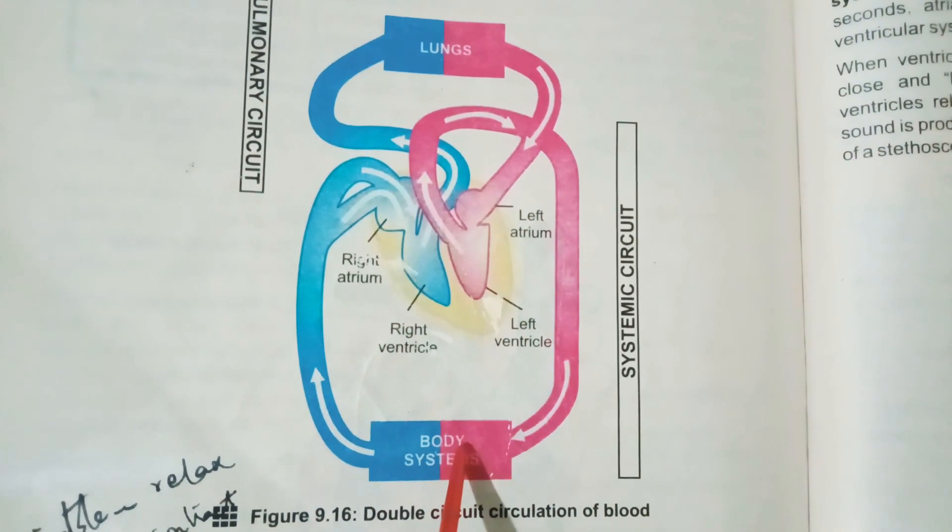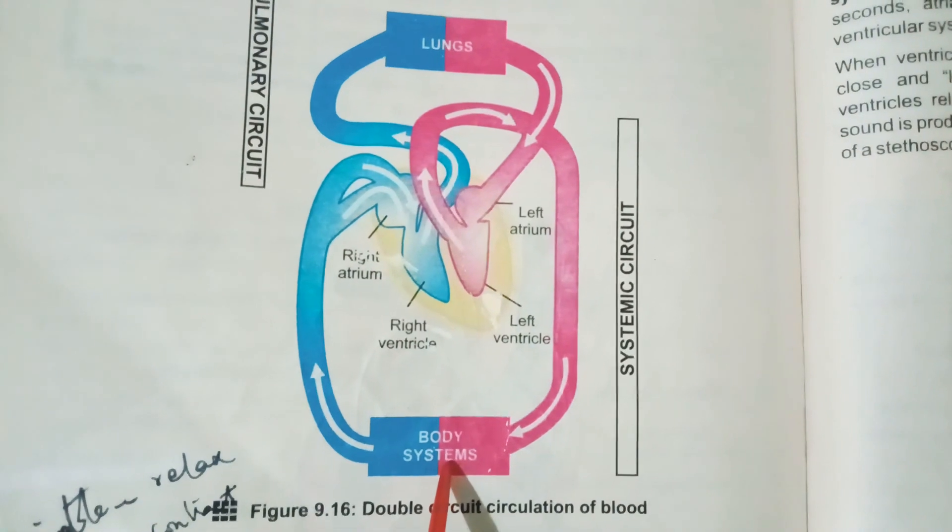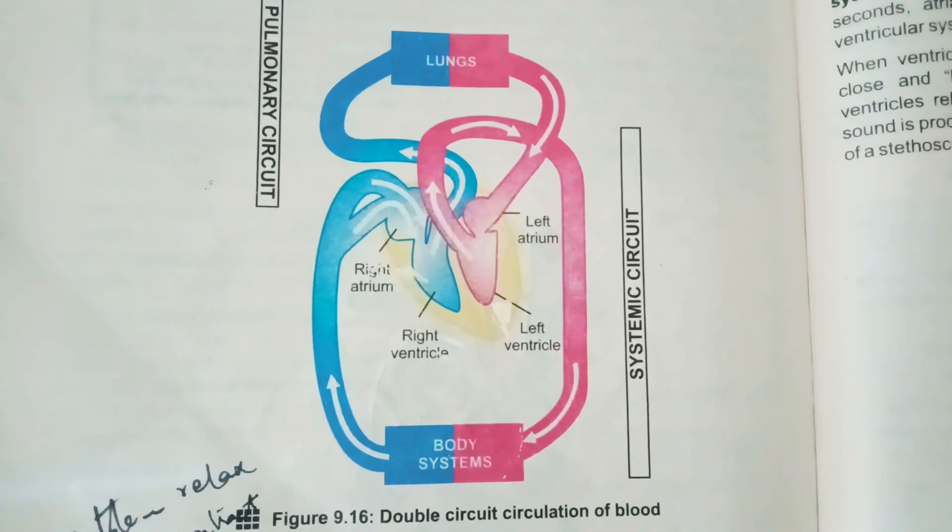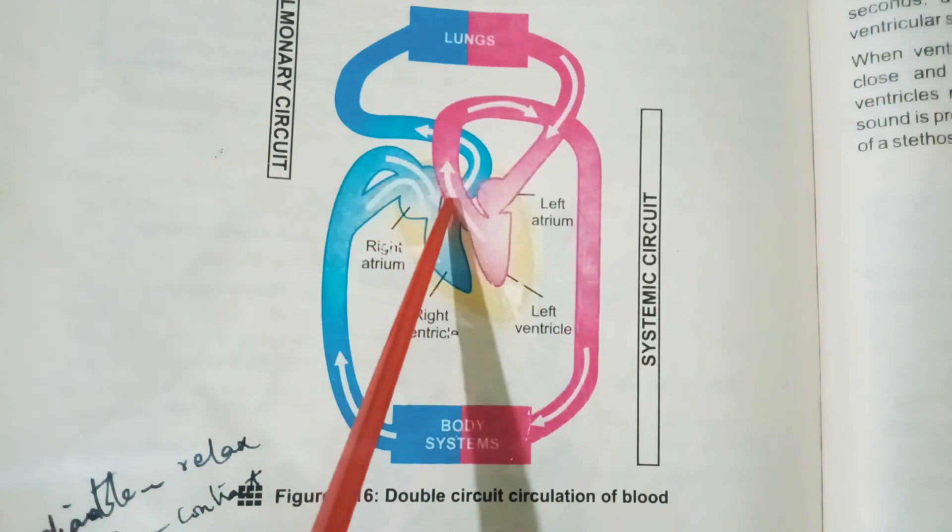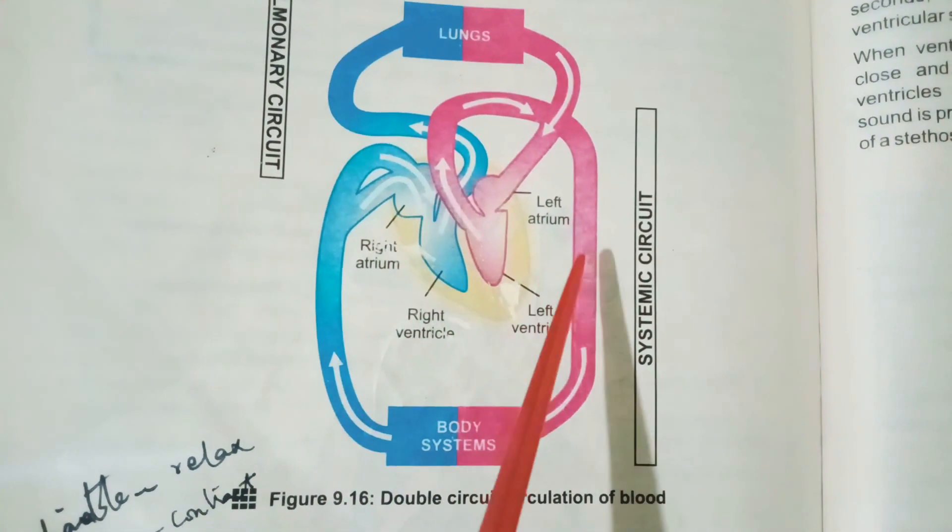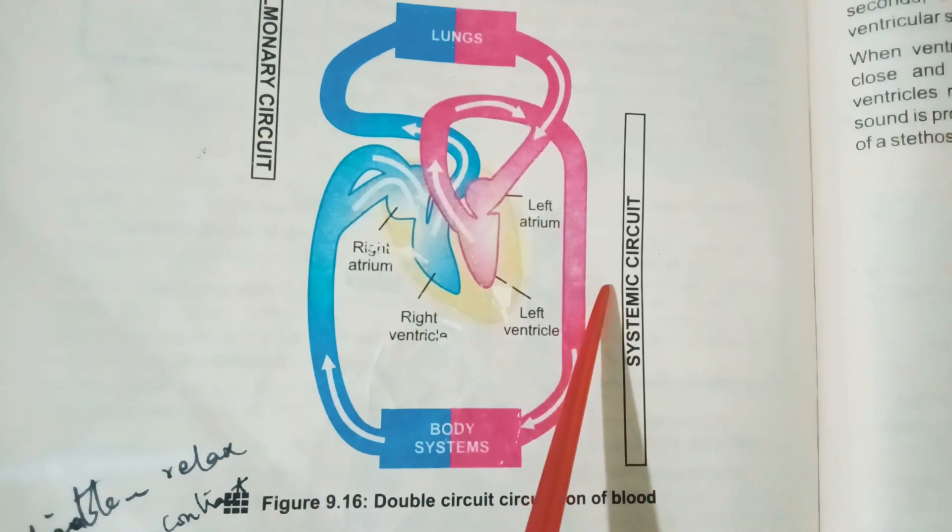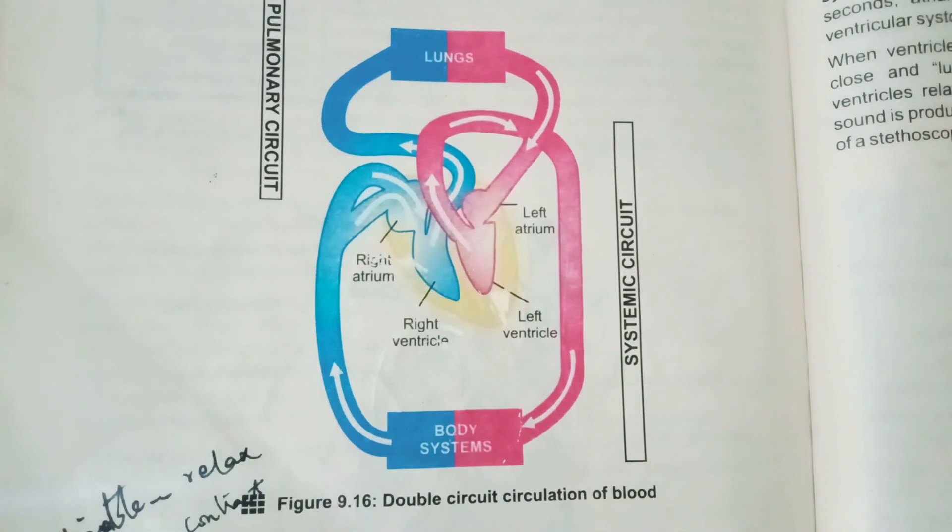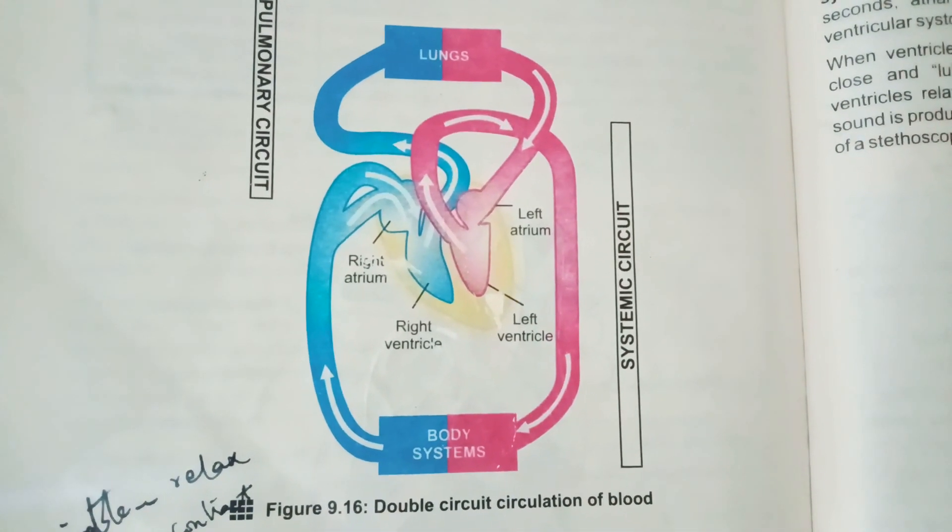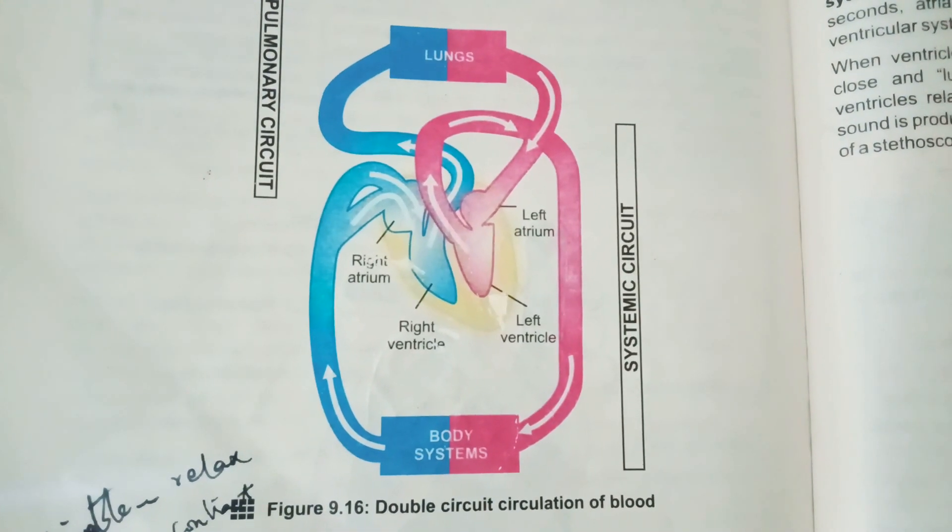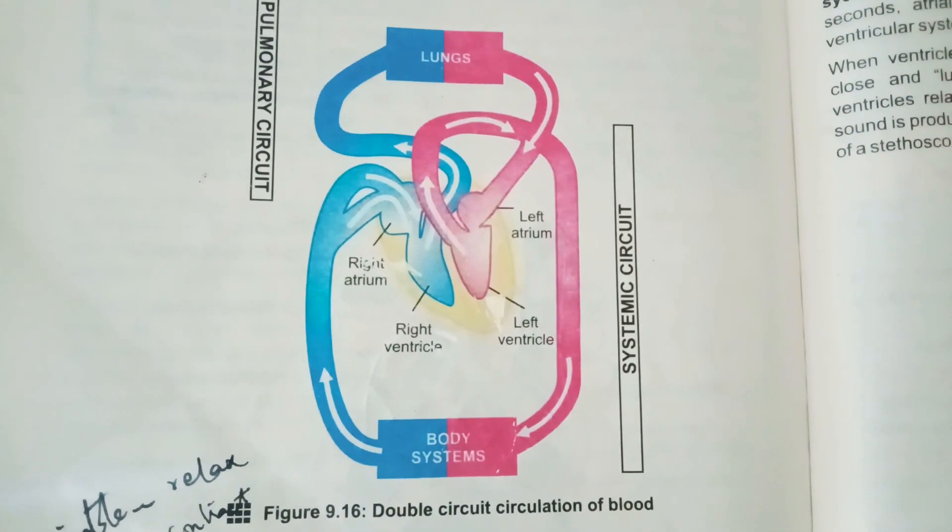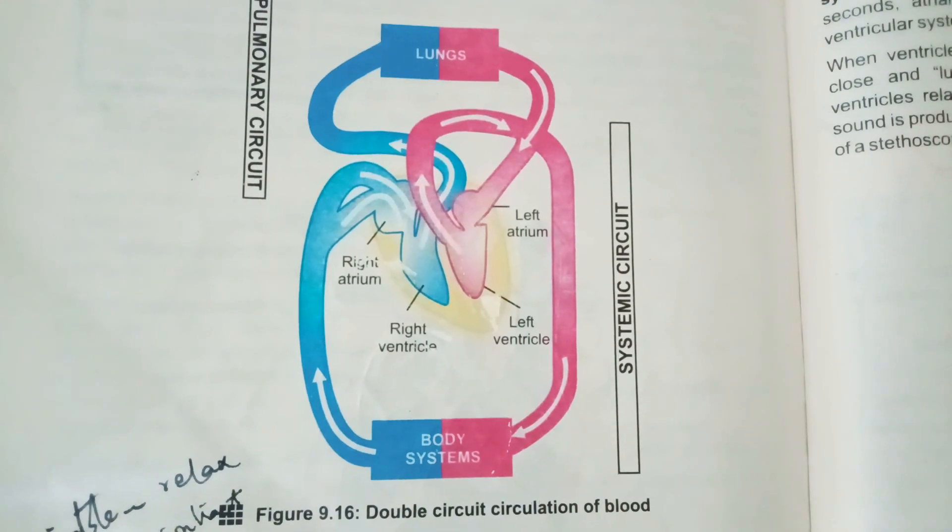Similarly, the pathway on which oxygenated blood is carried from the heart to the body tissues, and in return blood is carried from body tissues to the heart, is called systemic circulation or circuit. So this is double circuit circulation of blood.